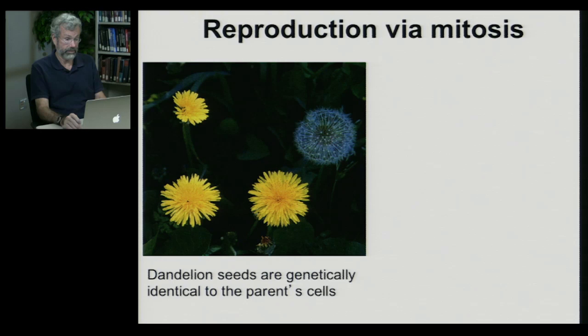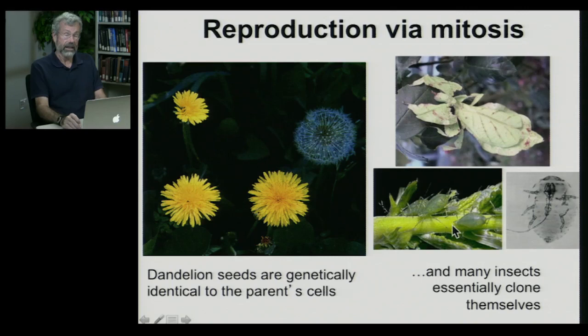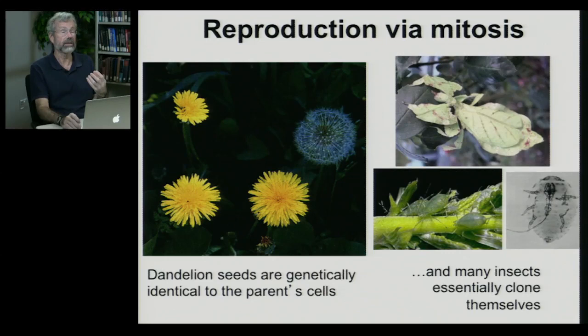Insects do this as well. Aphids at times, this leaf insect, this particular kind of creepy crawly here, are all known occasionally to clone themselves. Instead of producing a haploid egg, the female produces a diploid egg that develops perfectly normally into a daughter, who can likewise have diploid eggs.